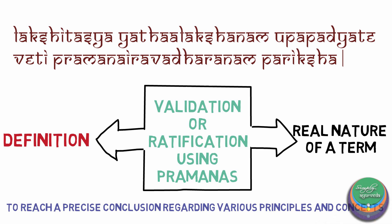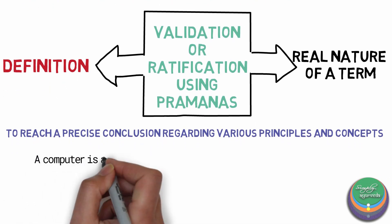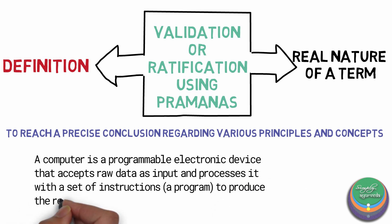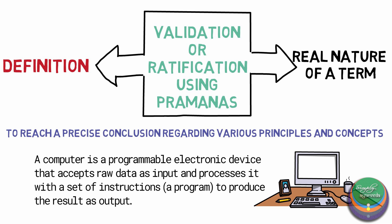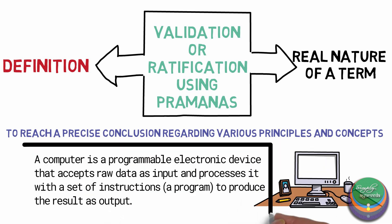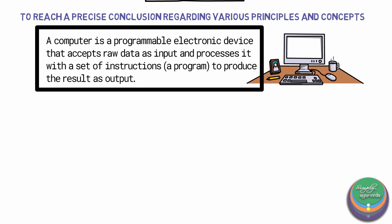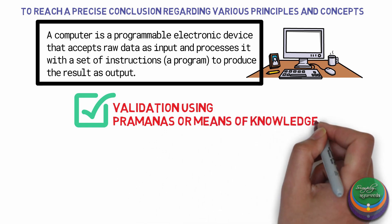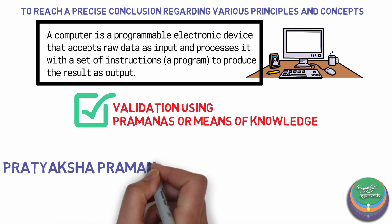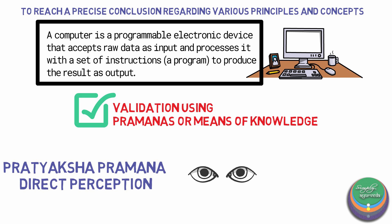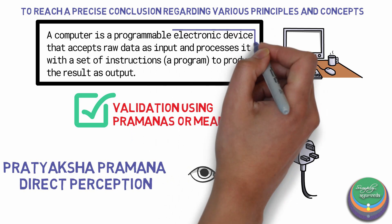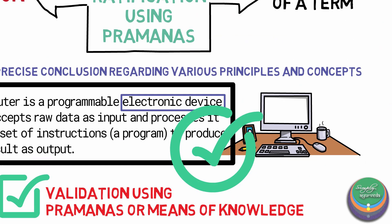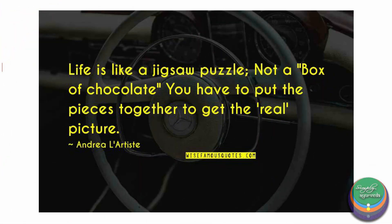Let us look into an example to understand this better. Consider the following statement: a computer is a programmable electronic device that accepts raw data as input and processes it with a set of instructions to produce the result as output. Pariksha, or examination, is the validation of this definition — validating whether a computer in reality is as defined in the statement. For this examination, we use various pramanas or means of knowledge. We use pratyaksha pramana, or direct perception, to understand that the computer is indeed an electronic device by observing that it operates when connected to a power source. Similarly, we use other pramanas to validate the whole definition. In simpler terms, pariksha is done to understand reality as it is.